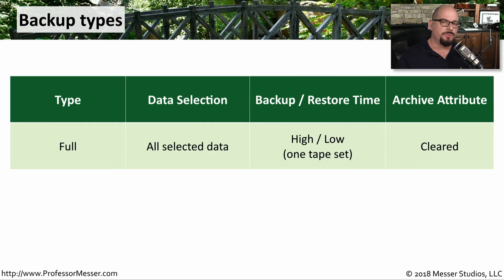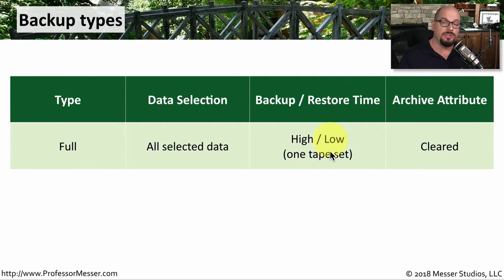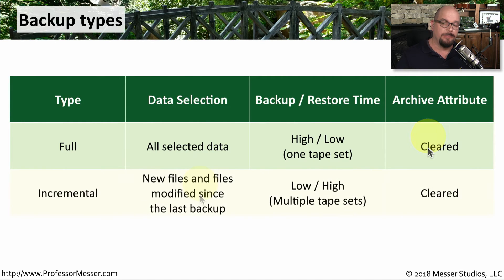Let's summarize those backup systems. A full backup is going to back up everything on that file system. It will take quite a bit of time to do that, but the restore time is relatively low since you only need to take the entire set of tapes and restore them at one time. Once you perform a full backup, all the archive attributes are cleared. An incremental backup is going to back up any new files and any files that have been modified since the last full backup or the last incremental backup.